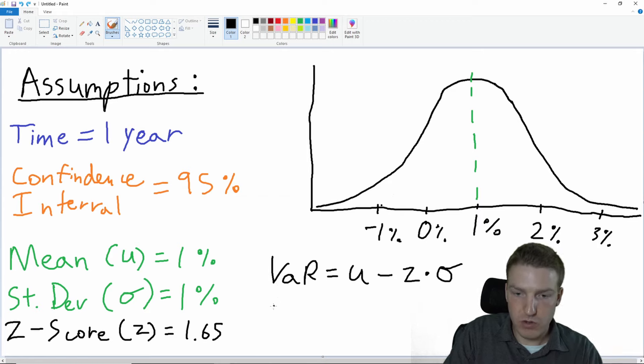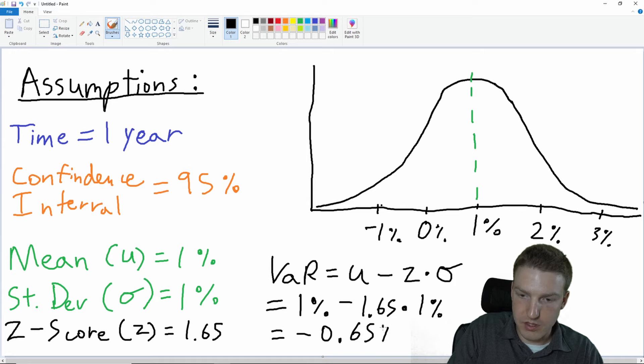Here's our VaR formula: mean minus z-score times standard deviation. This is a very simple concept. Let's plug in the numbers: 1% (the mean) minus 1.65 (z-score) times 1% (standard deviation). This gives us a VaR equal to -0.65%.